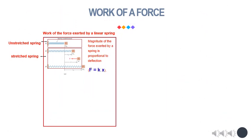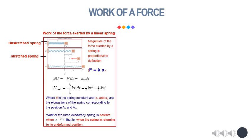The next situation is when a body A is attached to a fixed point B by a spring. We assume the spring is undeformed when the body is at the initial position. For a linear spring, the magnitude of the force F exerted by the spring on body A is proportional to the deflection x from the unstretched position. We can obtain the work of force F exerted by the spring during a finite displacement from A1 to A2 as: U1 to 2 equals one-half k x1 squared minus one-half k x2 squared, where k is the spring constant and x1 and x2 are the elongations corresponding to positions A1 and A2. Note that the work of the spring force is positive when x final is less than x initial, that is, when the spring is returning to its undeformed position.